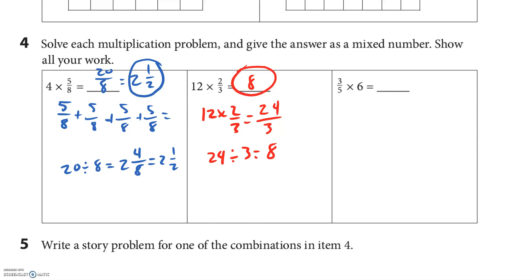3 fifths times 6. So 3 fifths — I can just multiply 3 times 6, which is 18, over 5. 5 goes into 18 — 5, 10, 15 — so it goes in 3 times with 3 remaining. My answer is 3 and 3 fifths.